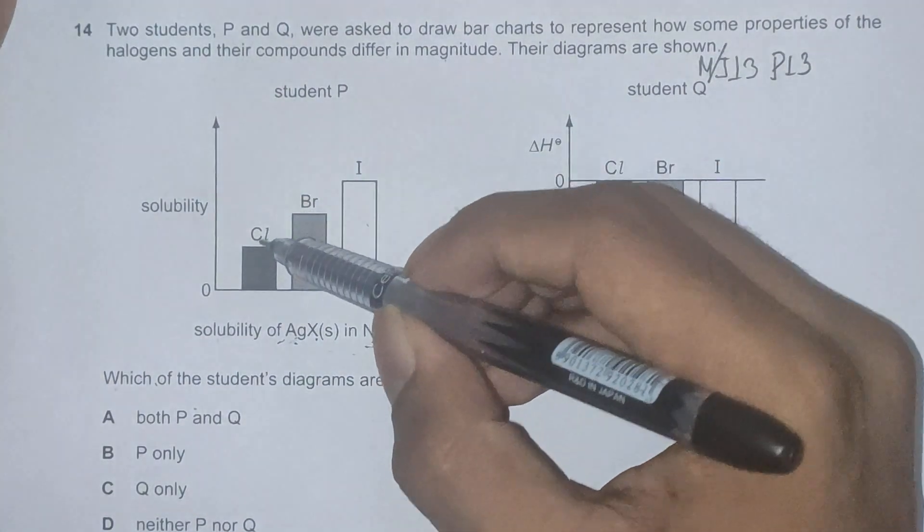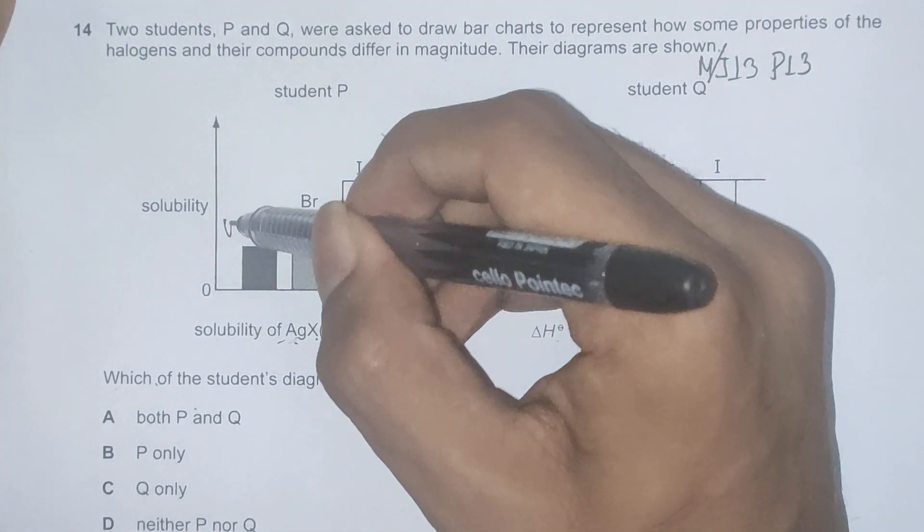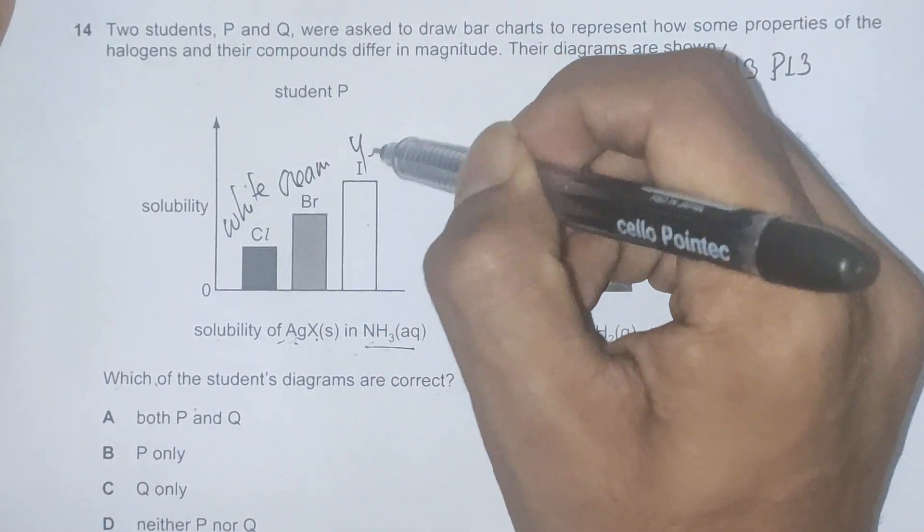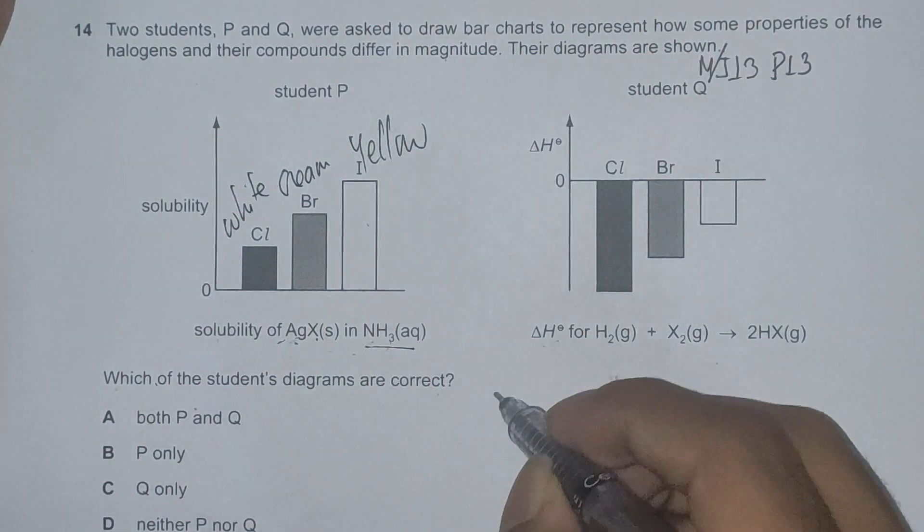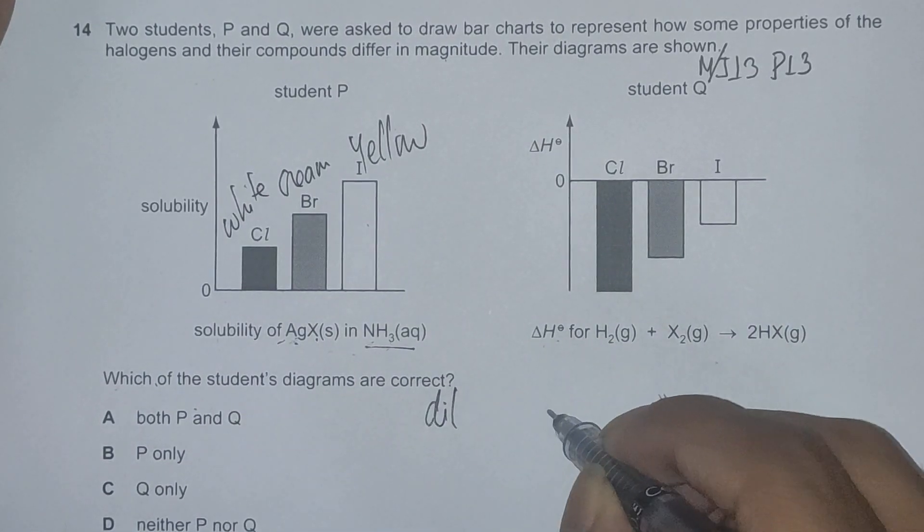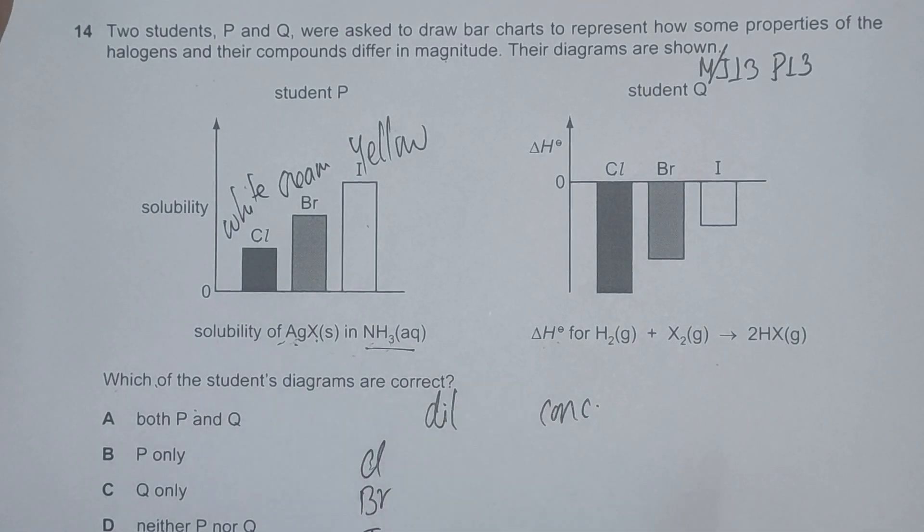The color of this solubility or this reaction is white. This is cream and this is yellow. Now, looking for both dilute and concentrated ammonia for chlorine, bromine and iodine.